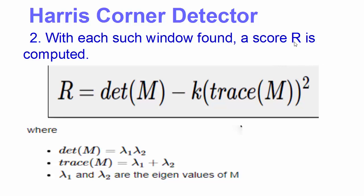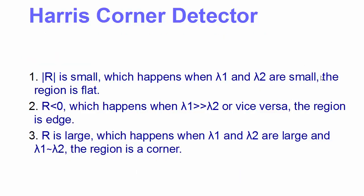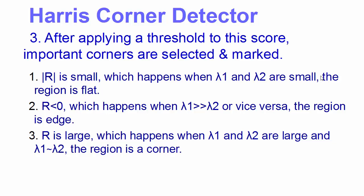Once we got the value of R, based upon the value of R we can make some decision in the third step. If the value of R is very small, that means the values of λ₁ and λ₂ are also very small, and we can conclude that the region is a flat region and not a corner. If the value of R is less than 0, that means λ₁ is very large in comparison to λ₂ or vice versa, and that means it's an edge and not a corner.